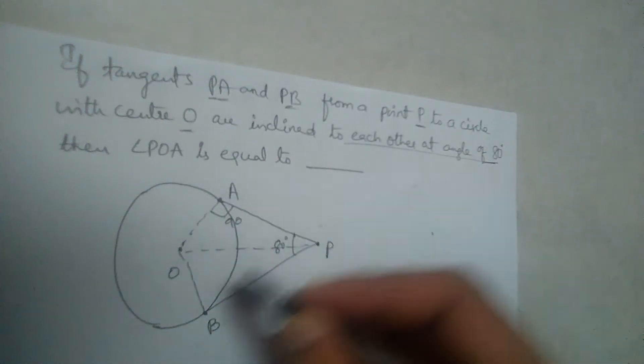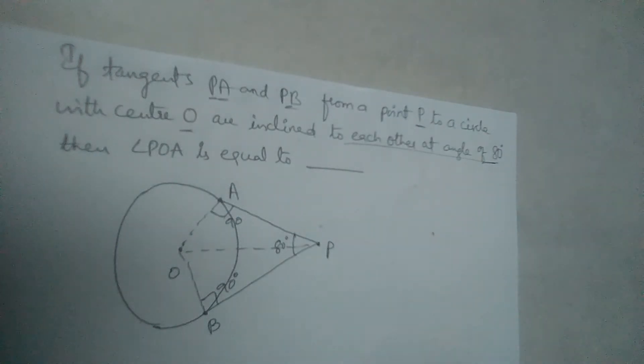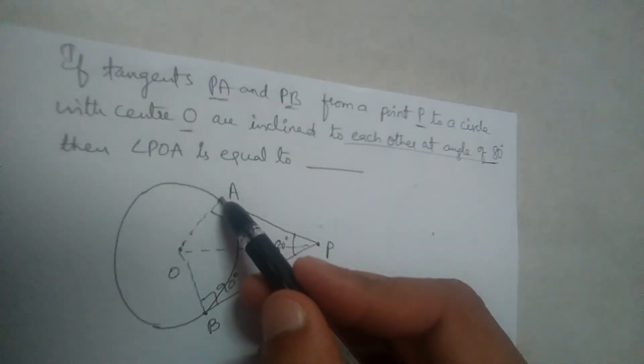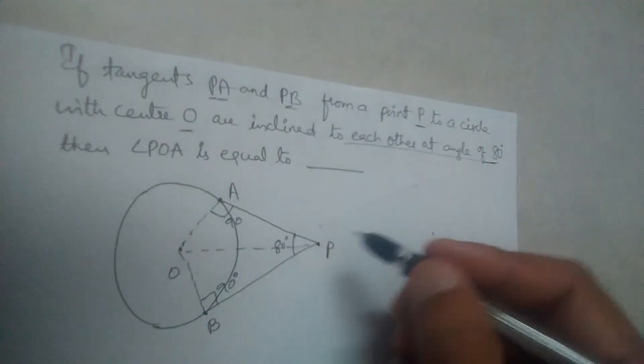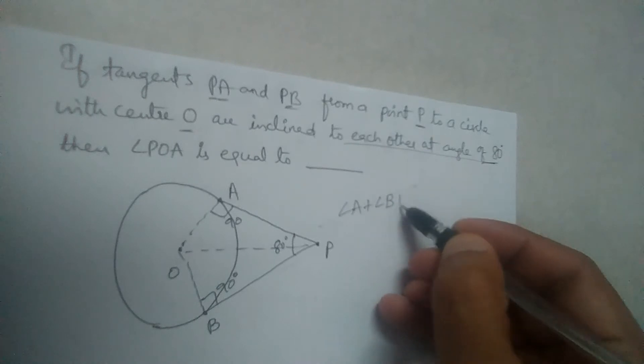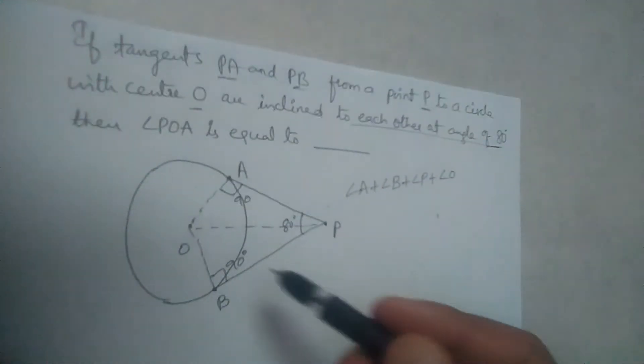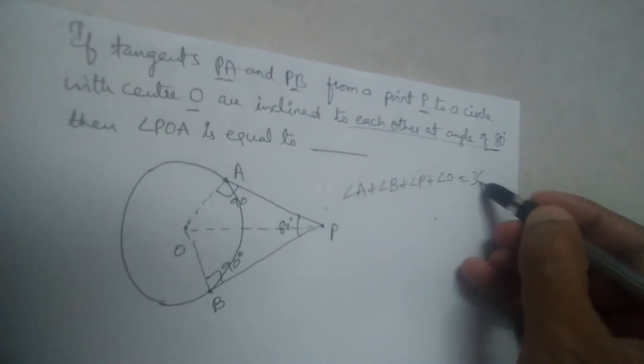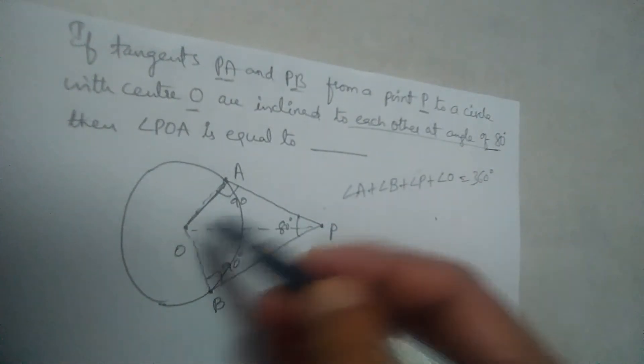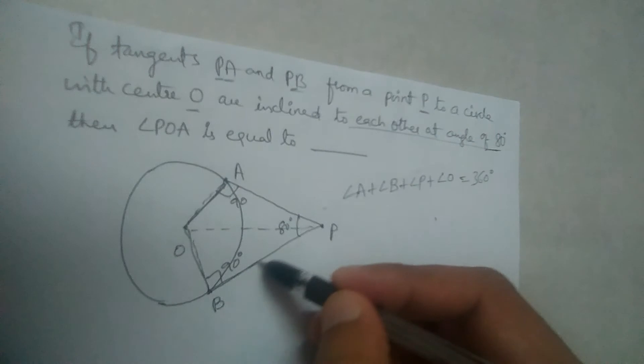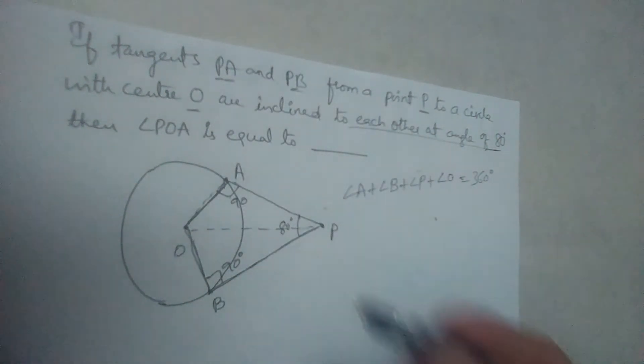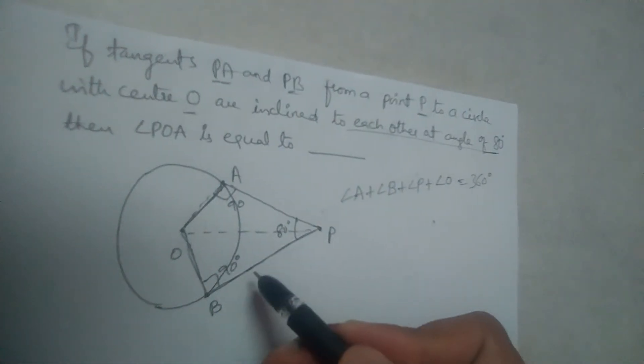See here angle A will be 90, angle B will be 90 degrees. Because tangent and radius will be perpendicular to each other. Here also tangent and radius will be perpendicular to each other. So angle A plus angle B plus angle P plus angle O should be equal to 360 degrees because OA and OB, BP and PA will form a quadrilateral four-sided diagram isn't it?